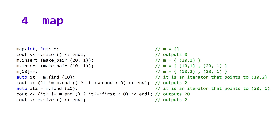Taking a look at our code example, after we initialize our map, it has a size of zero. We then insert the key-value pair 20 and 1, then the key-value pair 10 and 1. On line 5, we use the bracket operators to retrieve a reference to the value attached to the key 10, which is 1, and we use the post-increment to change that value from 1 to 2. On the next four lines, we make calls to the find method, which works similarly to the find method in set. We can then use the arrow operator first to access the key and the arrow operator second to access the value. At the end of this code example, our size is equal to 2.